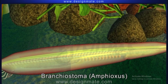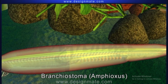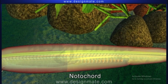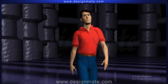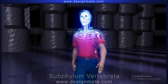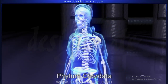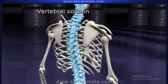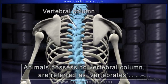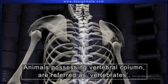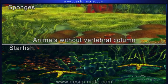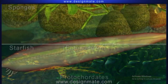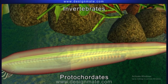Animals like Branchiostoma or amphioxus, belonging to subphylum Cephalochordata, have presence of notochord throughout their life. In animals like human beings, belonging to subphylum Vertebrata, the notochord is replaced in the adult animals by a vertebral column. Such animals possessing a vertebral column are referred to as vertebrates. Animals without a vertebral column, like sponges, echinoderms and proto-chordates, are referred to as invertebrates.